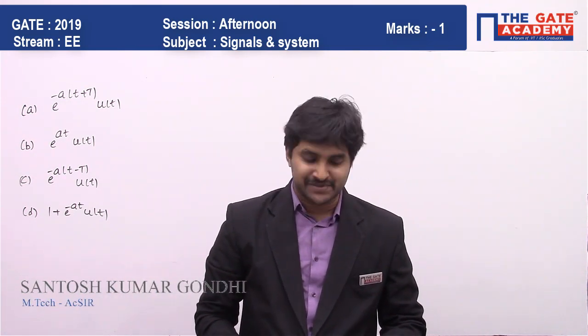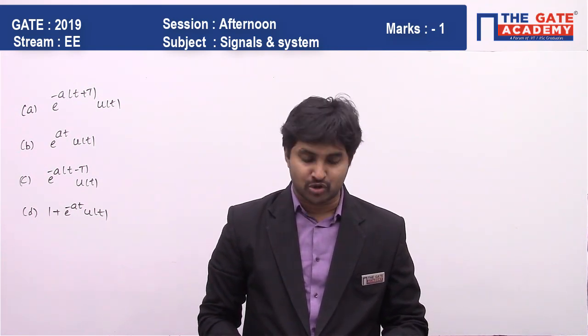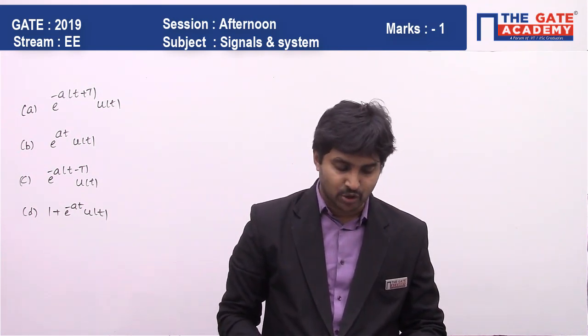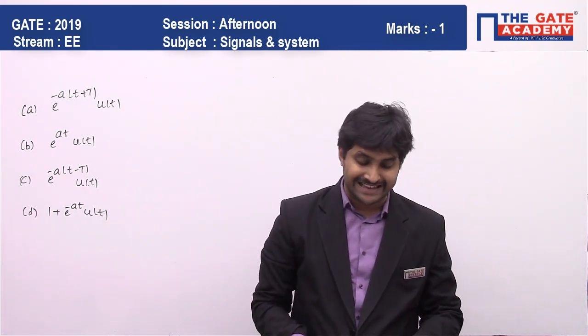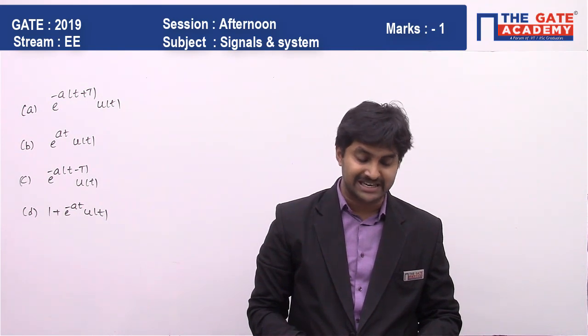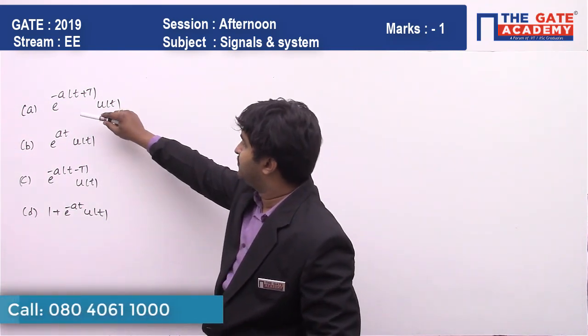In this video we're going to see a question from Signals and Systems, from the chapter LTI systems. First of all, let me read the question: A and T are positive, then which of the following is not the impulse response of a causal LTI system? Option A is e^